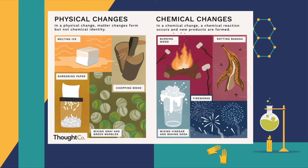In comparison with a physical change — like last week — a physical change means that the molecules do not change what they look like, and this means that the object is still made of the same thing. But in a chemical change, you're making something completely new.